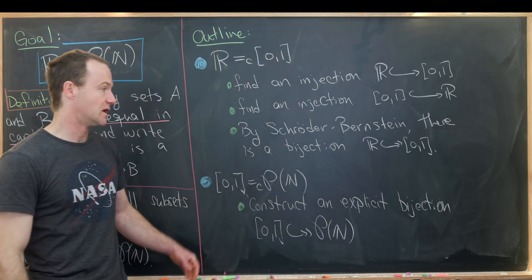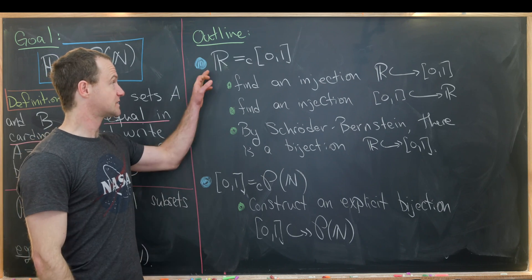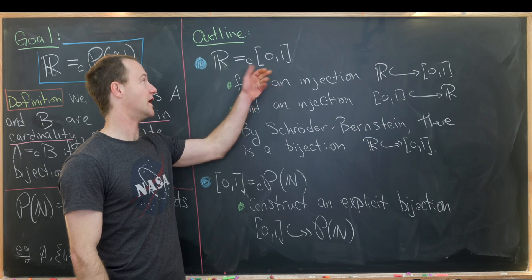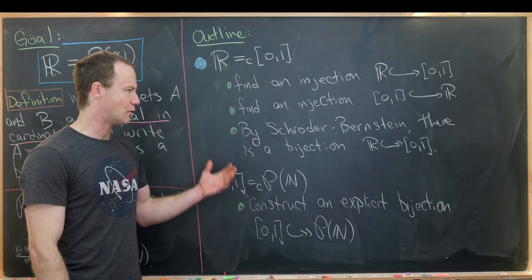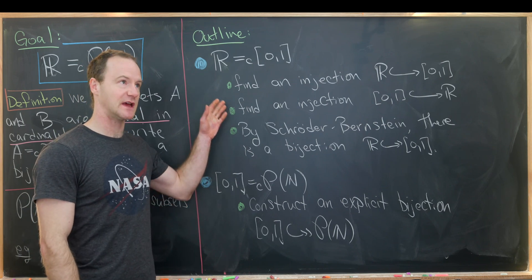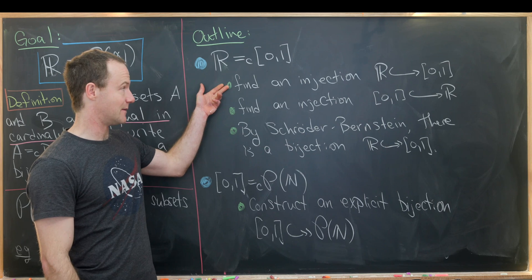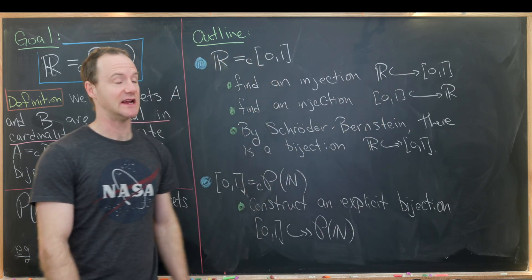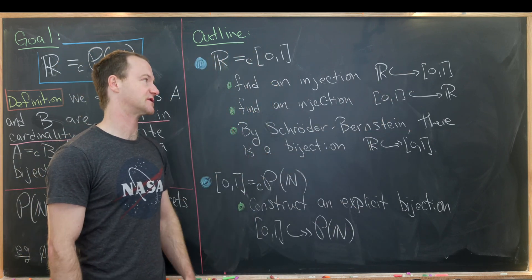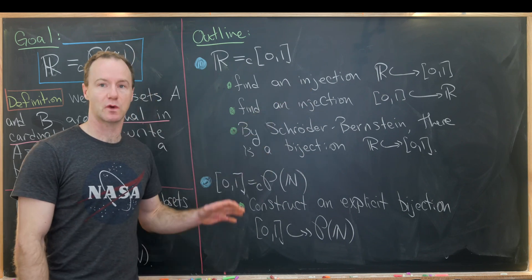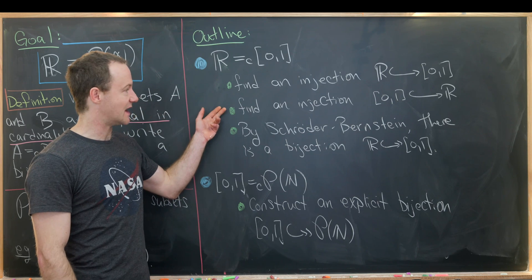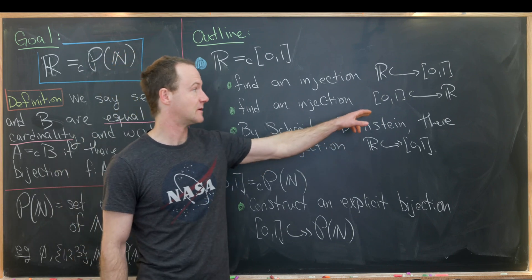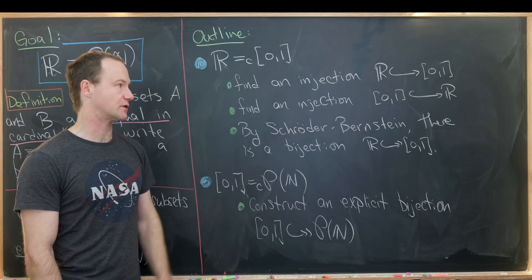Here's an outline for our process. First, we'll show that the set of real numbers and the closed interval [0,1] are equal in cardinality, and that will require two steps. The first step is to write down an injection from the real numbers to the closed interval [0,1]. Our next step will be to find an injection in the reverse direction, from the closed interval [0,1] to the real numbers.